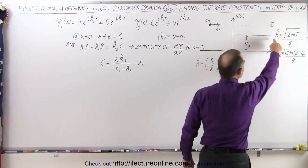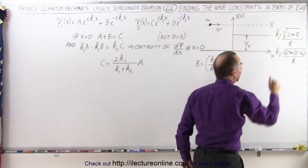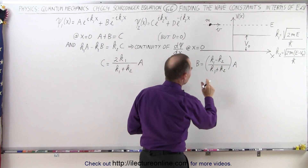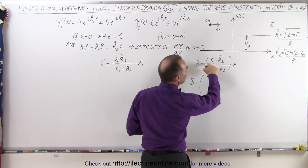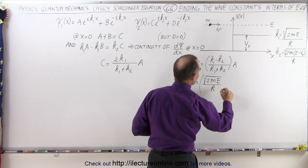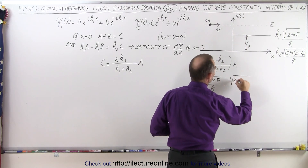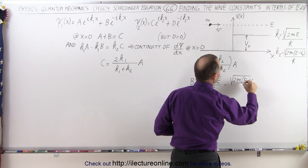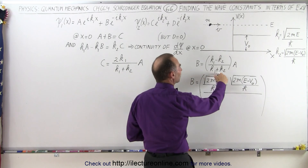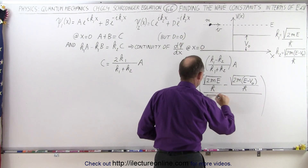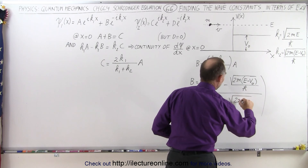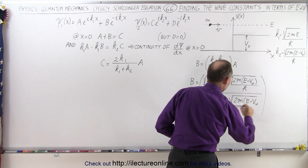We're going to replace k1 and k2 with what they're equal to in terms of the energy of the particle and the potential of the barrier. So b is equal to, instead of k1, we write the square root of 2 times the mass of the particle times the energy of the particle divided by h-bar, minus k2, which is the square root of 2m times the difference of the energy of the particle and the potential of the barrier, divided by h-bar. Then we divide all that by k1 plus k2, so the square root of 2mE over h-bar plus the square root of 2m times (E minus the potential) divided by h-bar.